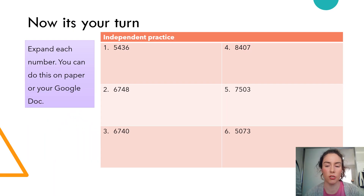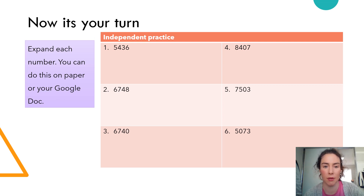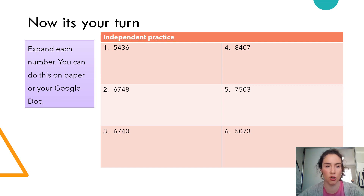For today's questions, you want to expand your numbers. Because you can do this straight into your Google Doc, you may choose to do that, or work on paper. We're looking for you to write something like 5,000 plus 400 plus 30 plus 6 to show your understanding of partitioning.